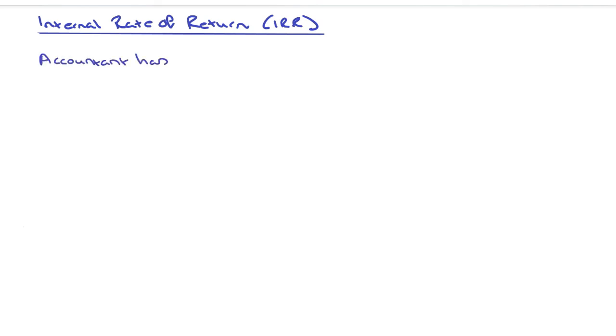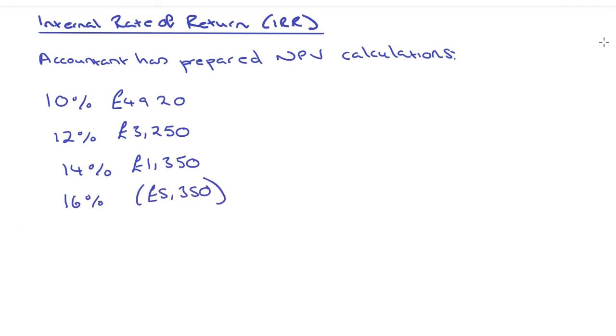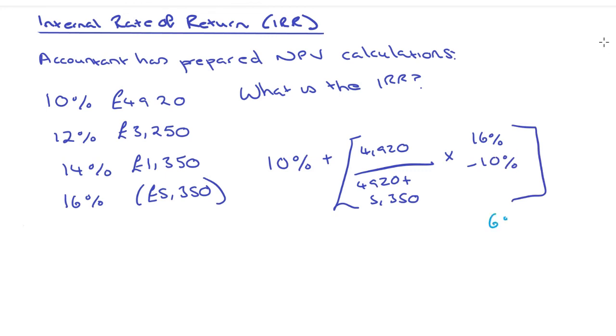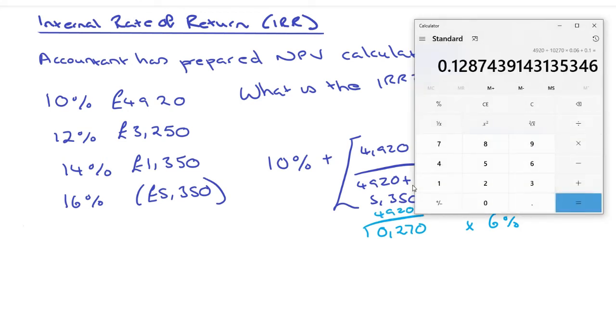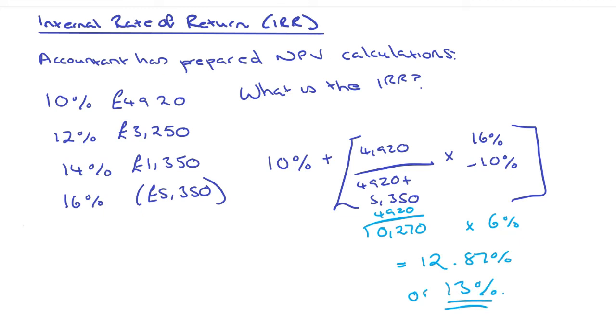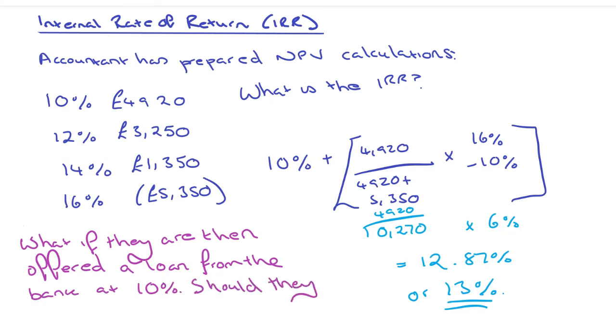One final example: an accountant has prepared NPV calculations where 10% interest would be £4,920 net present value, 12% would be £3,250, 14% would be £1,350, and 16% would give you negative £5,350. The way to work out the IRR is to take 10% plus 4,920 because that's the lowest rate, divided by 4,920 plus 5,350, then multiply that by the difference between 16% and 10%. That gives us 12.87%, or rounded 13%. So what if the bank was to say, we'll offer you a loan at 10%? Should they go ahead with the project? The answer would be yes, because the 13% is higher than 10%. I hope that gives you a better understanding of the internal rate of return.